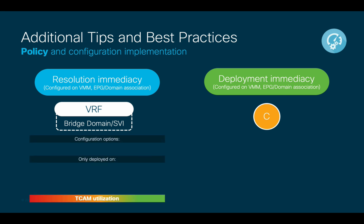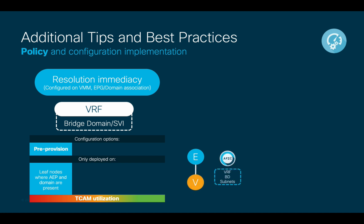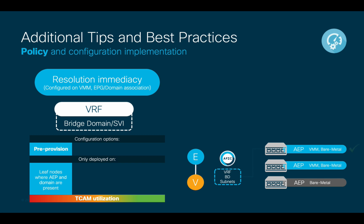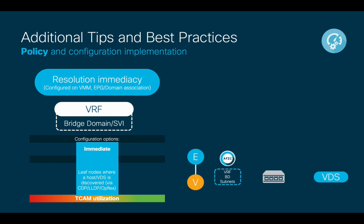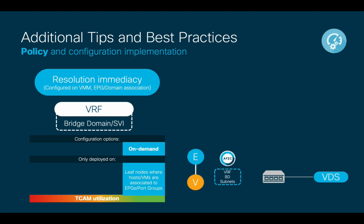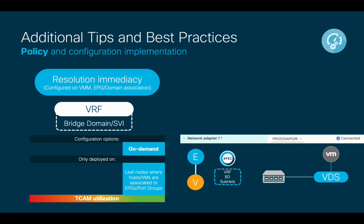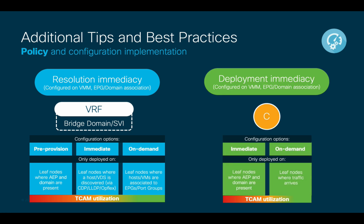In terms of resolution immediacy, we have three options. One: pre-provision — as soon as I map an EPG to a domain, ACI will program the corresponding VRFs, bridge domains, and subnets on each leaf that has that domain configured through an AEP. Two: immediate — ACI will only push the configuration after mapping an EPG to a domain if it has established a CDP, LLDP, or Opflex relationship between the leaf node and the other end, such as a virtual switch or ACI virtual edge. Three: on-demand — ACI will wait until there are actual VMs or hosts using such EPG or port group before pushing the configuration, for example after a VM has been assigned to the port group. In terms of deployment immediacy, the options are immediate and on-demand. On-demand is the most efficient option in both cases and therefore is commonly the default value.